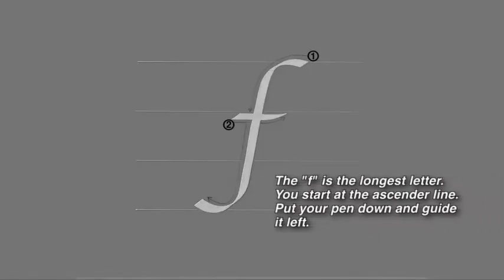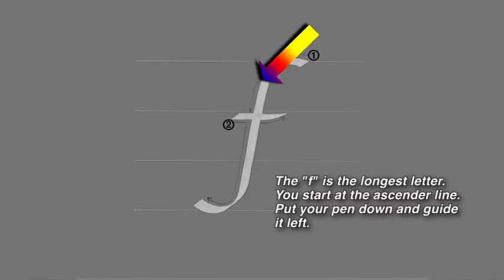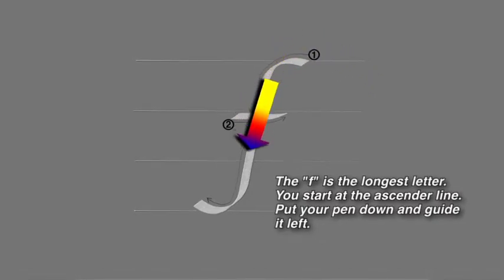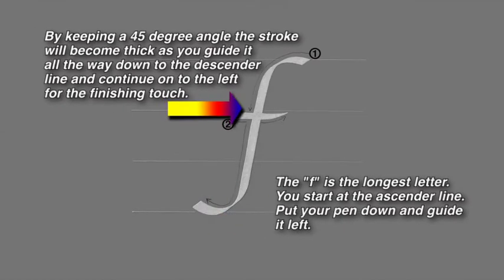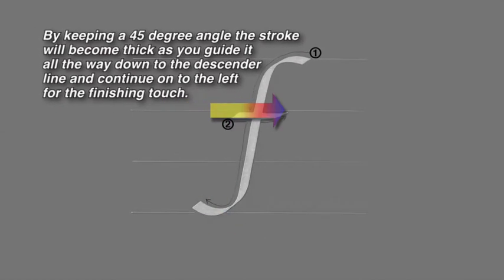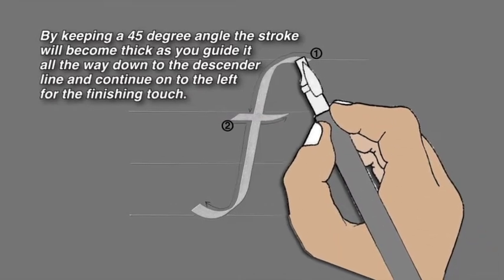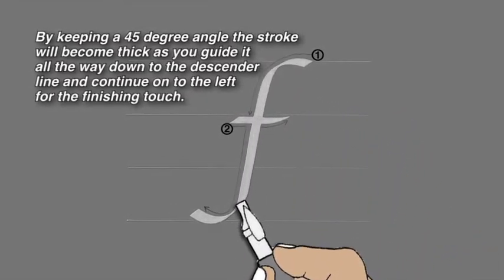The F is the longest letter. You start at the ascender line, begin your stroke, place your pen down on the paper and guide it to the left. By keeping the pen at a 45 degree angle, the stroke will become thick as you guide it all the way down to the descender line and continue on to the left for the finishing touch.